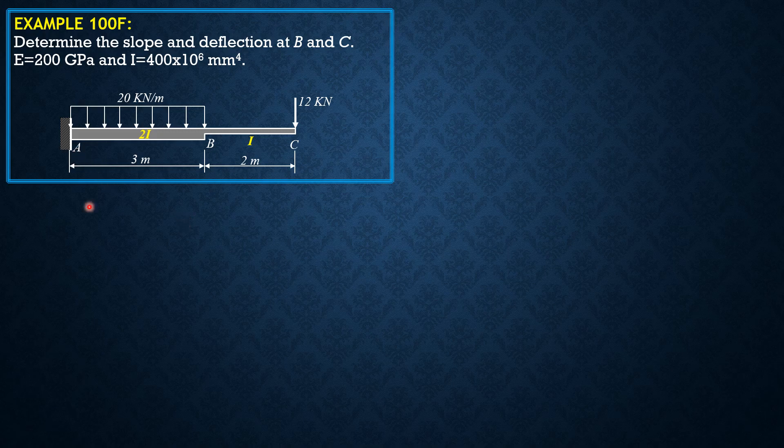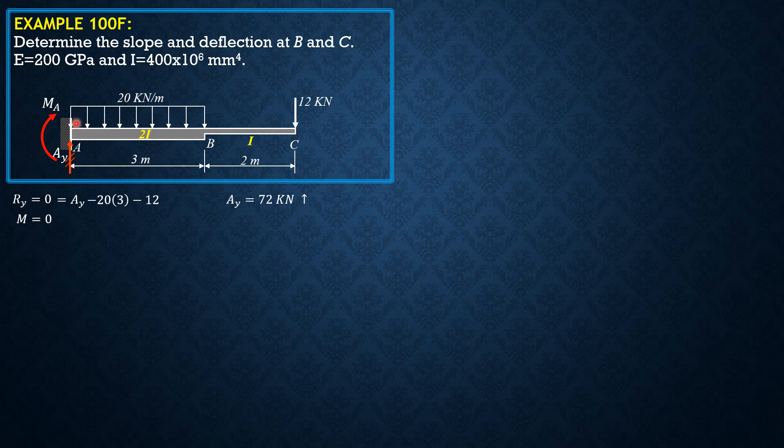So first, let's solve for the reaction at A. Vertical and moment reactions. The horizontal reaction is zero, of course, because the loadings are all vertical. Let's assume positive MA always clockwise at the left, counterclockwise at the right for positive bending. So RY equals zero equals AY minus 20 times 3, then minus 12. So solving for AY, AY is equal to 72 kilonewtons upward.